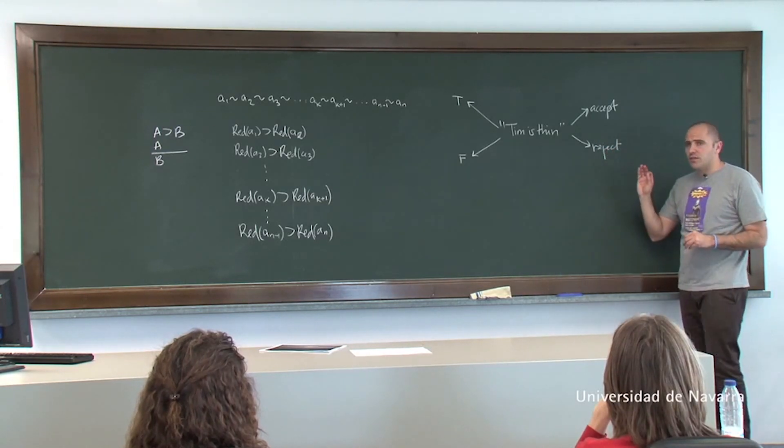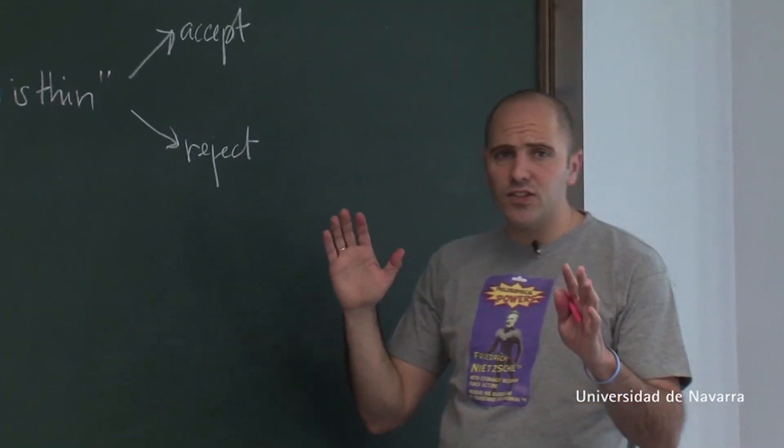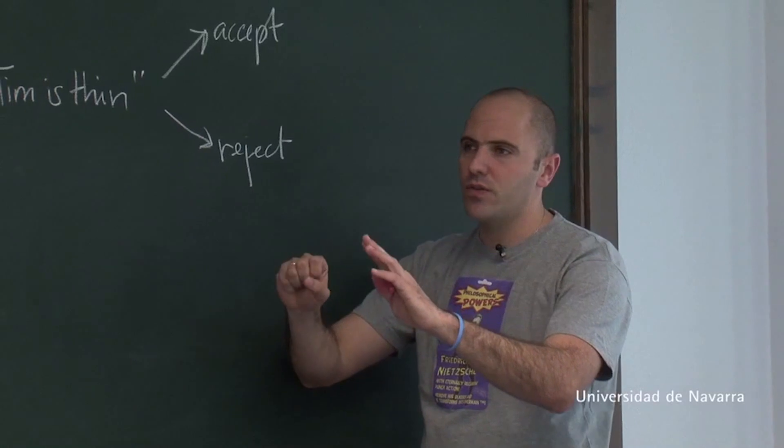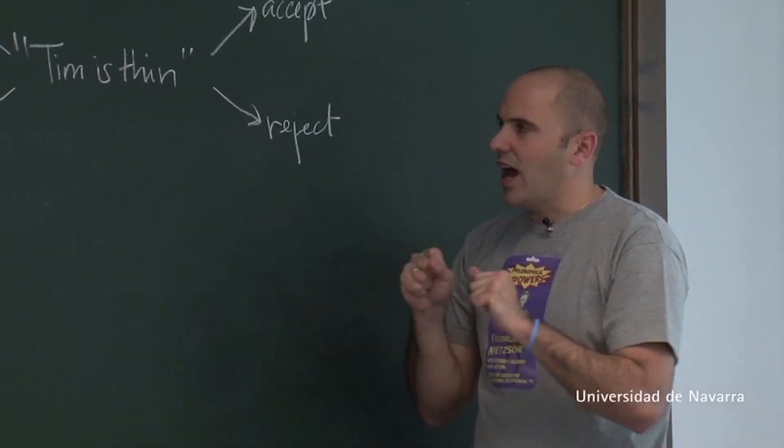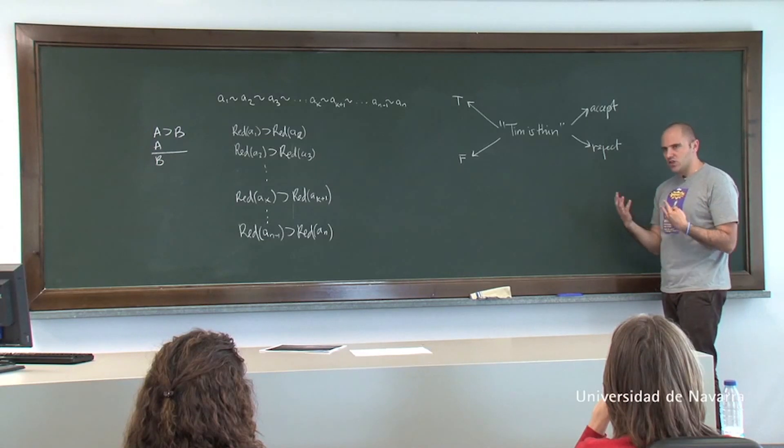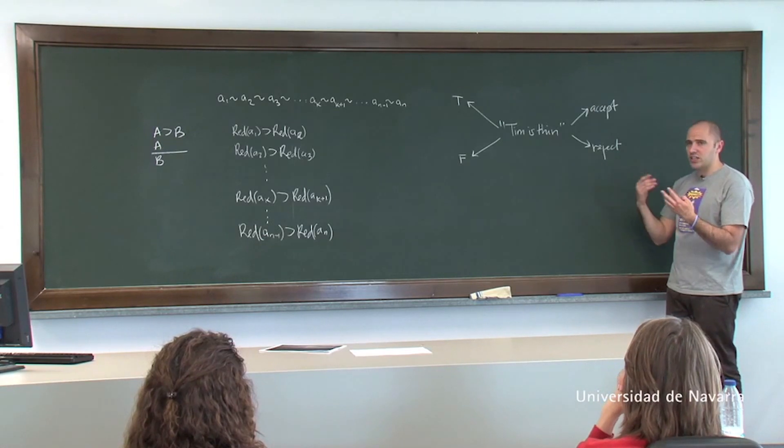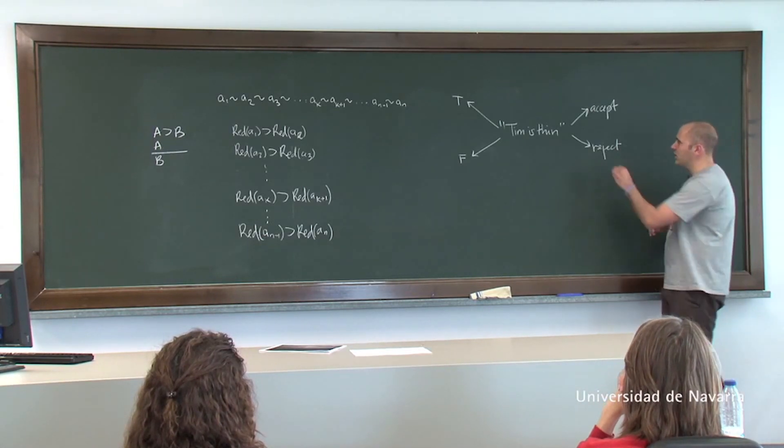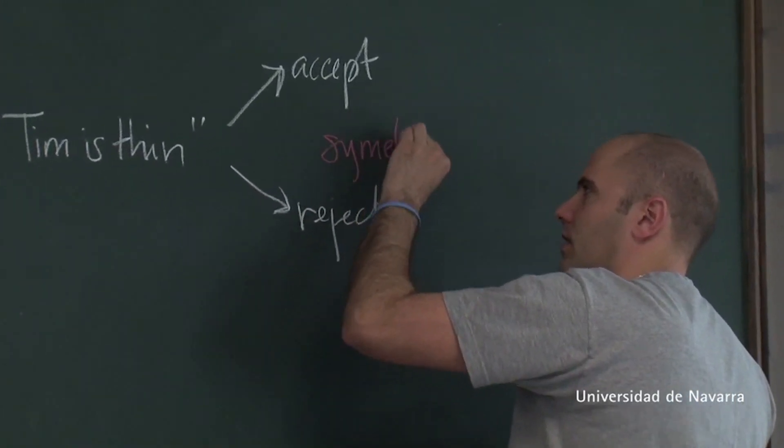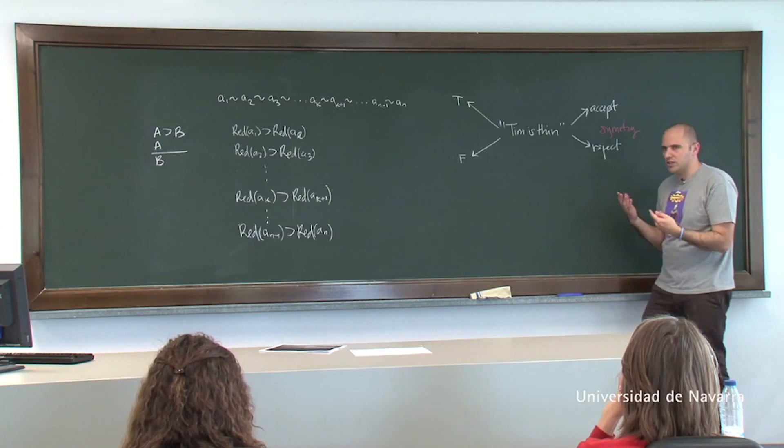Now it is supposed to be part of the phenomenology of borderline cases that competent speakers won't just accept, for example, that Tim is thin and reject that Tim is not thin. So in borderline cases competent speakers tend to hesitate between acceptance and rejection. So there is a sort of symmetry in the dispositions.